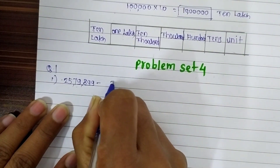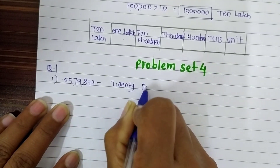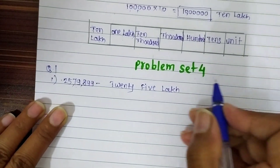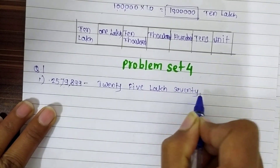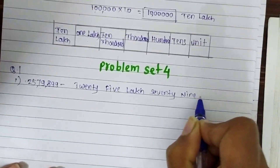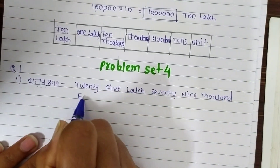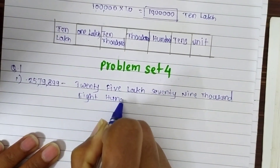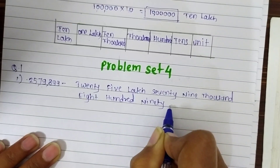The answer is: 25,00,000 is twenty-five lakh, seventy thousand, nine thousand — so seventy-nine thousand, eight hundred, and ninety-nine. Twenty-five lakh seventy-nine thousand eight hundred and ninety-nine.